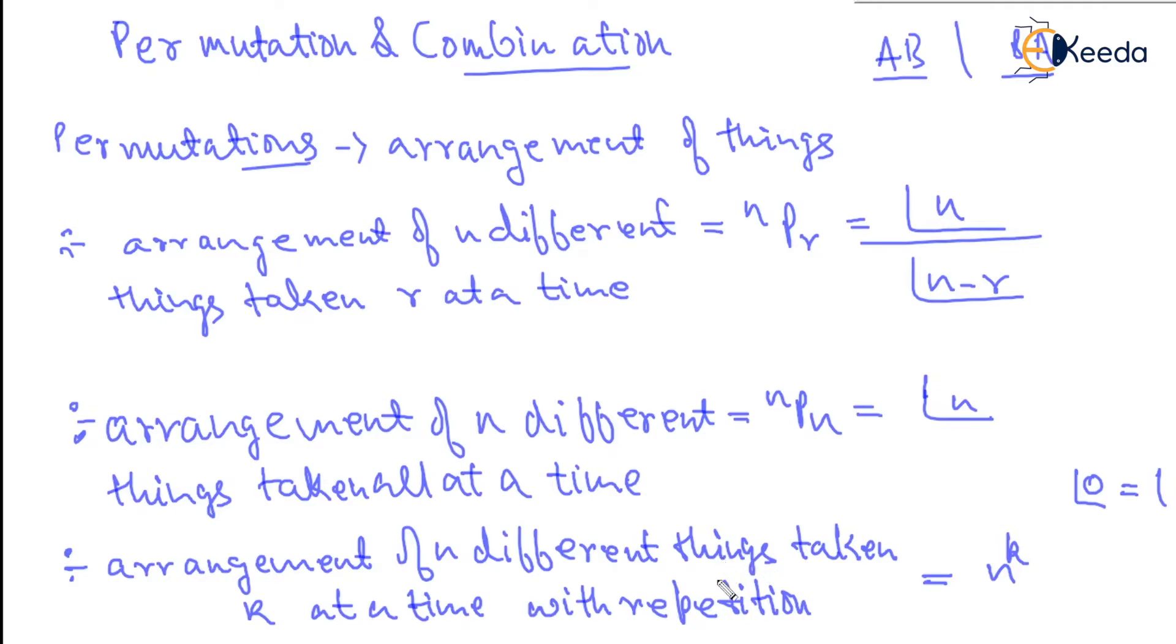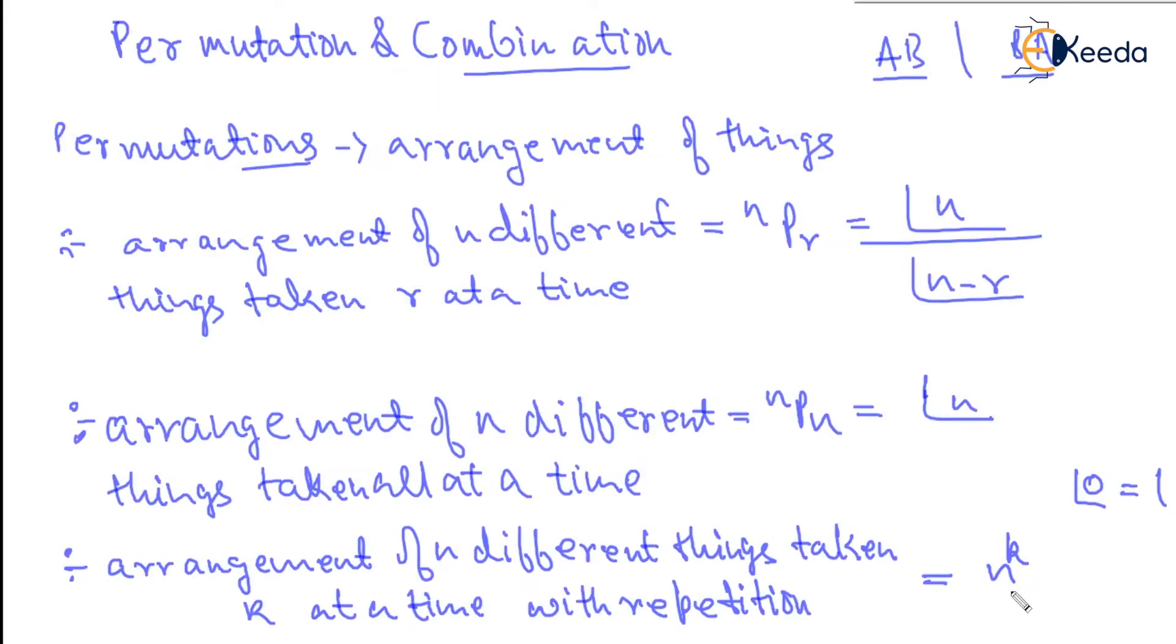For example, we have three digit numbers to be formed and all numbers can be repeated. Let's say we have 26 alphabets and we need to take 3 at a time with repetition. That means we can fill this in 26 ways, 26 ways, and 26 ways. So the number of ways will become 26 to the power of 3. That is n to the power of k if repetition is allowed.